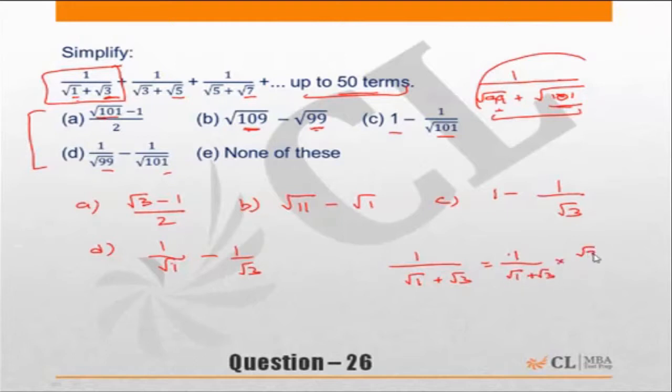Because root 1 doesn't make a difference, I did root 3 minus 1 because root 3 is greater than 1 so I don't get stuck with negatives. So this will become root 3 minus 1 in the numerator and denominator will be root 3 square minus 1 square, which is root 3 minus 1 upon 3 minus 1, which is 2.